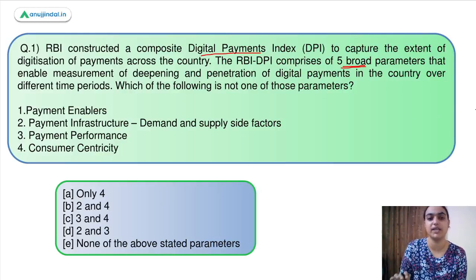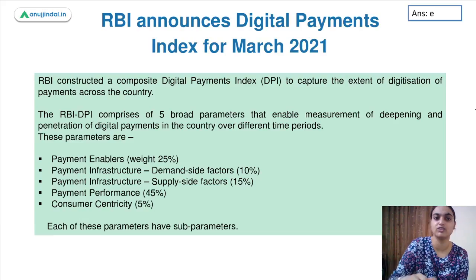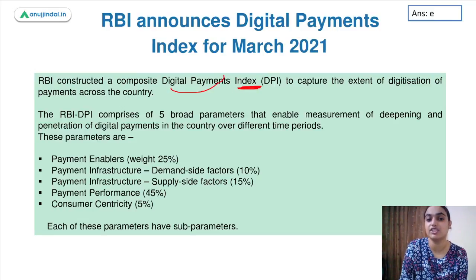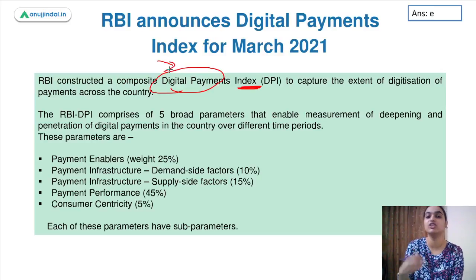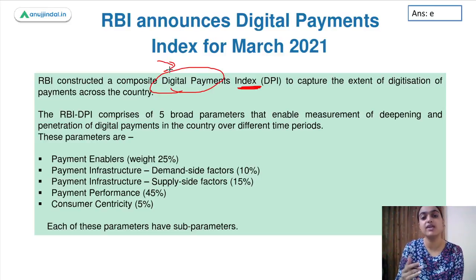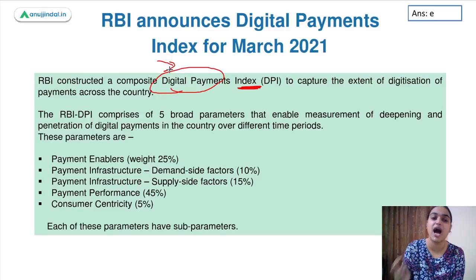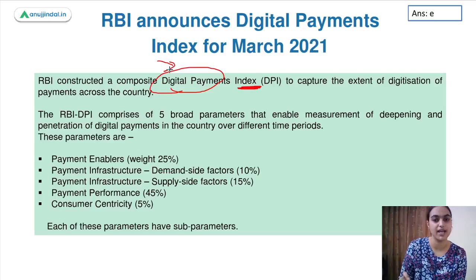Let's discuss a bit about this index and then come back to the question. RBI constructed an index called the Digital Payment Index. As the name suggests, it gauges the extent of digital payments used in our country — how much digitized have we become when it comes to making payments online. Different platforms are available: mobile banking, UPI, different e-wallets. That measurement is done through this very index which RBI constructed.